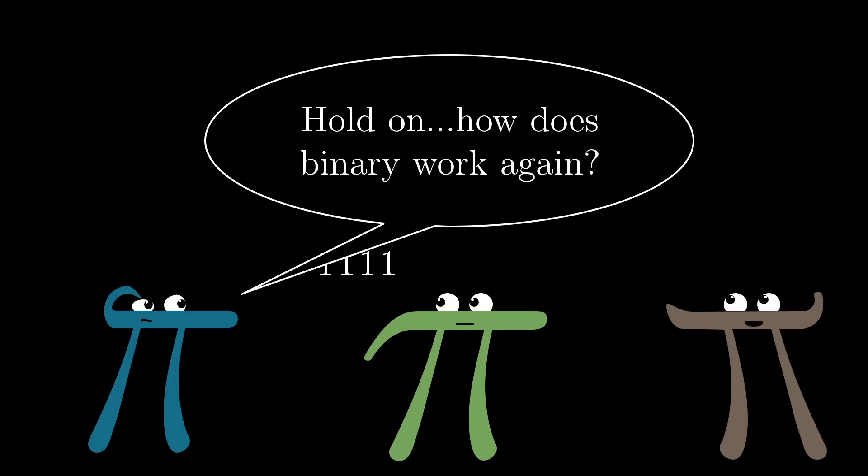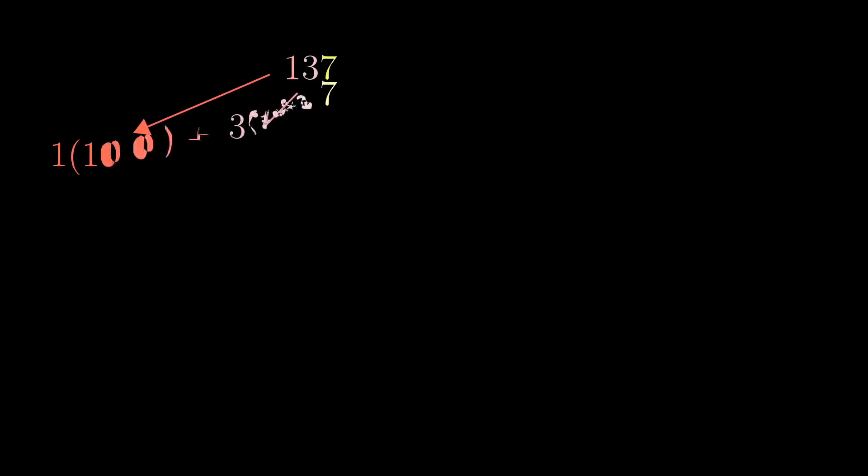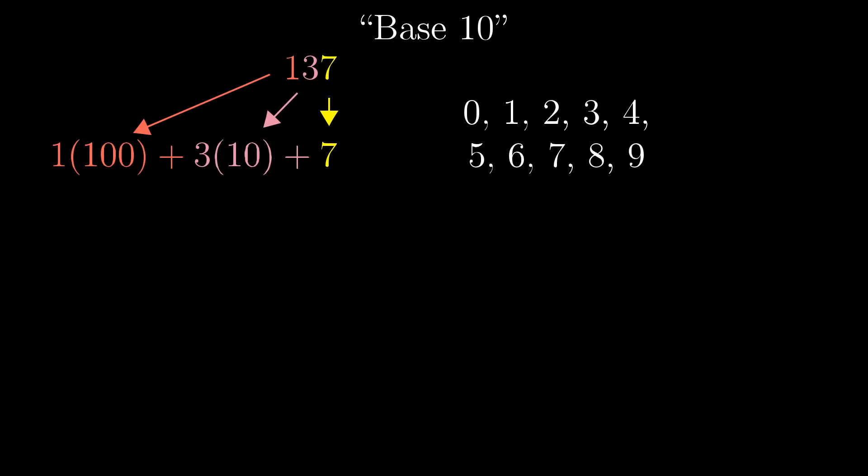Actually, even if you are familiar with binary, I want to explain it with a focus on the rhythm of counting, which you may or may not have thought about before. Any description of binary typically starts off with an introspection about our usual way to represent numbers, what we call base 10, since we use 10 separate digits: 0, 1, 2, 3, 4, 5, 6, 7, 8, 9. The rhythm of counting begins by walking through all 10 of these digits.